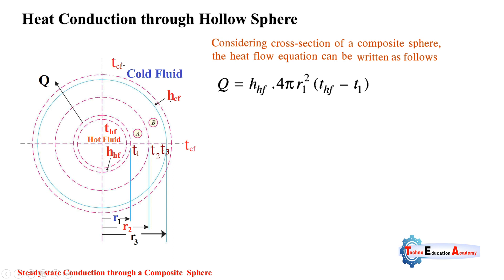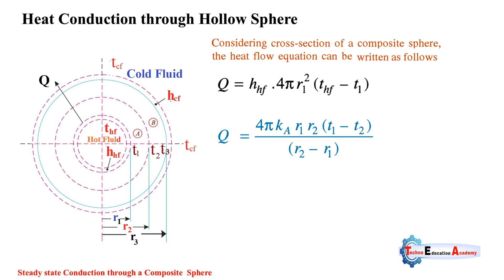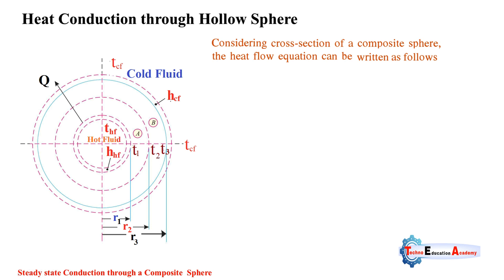Thf is the temperature of hot fluid and tcf is the temperature of cold fluid. T1, T2, and T3 are the temperatures at intermediate layers. R1, R2, and R3 are the radii of the first, second, and third layers measured from the origin of the hollow sphere.